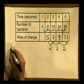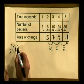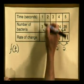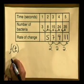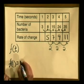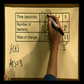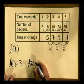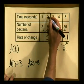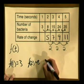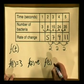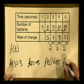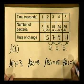Let's use this clue about quadratics to find the relationship. I'm going to call the function f, using f(t) because it's a function of time. When t = 1, the number of bacteria is 3, so f(1) = 3. When t = 2, f(2) = 8. When t = 3, f(3) = 15. And when the input is 4, f(4) = 24.